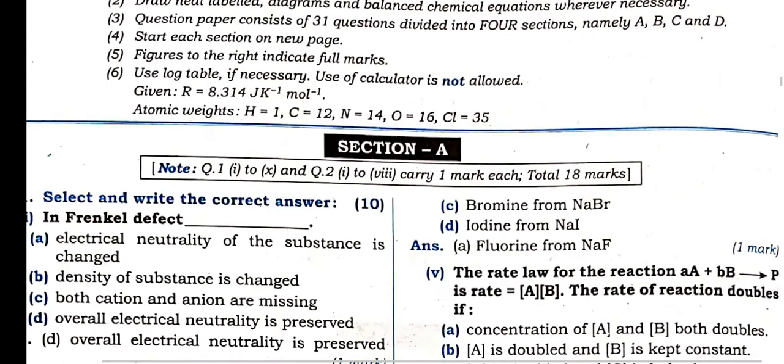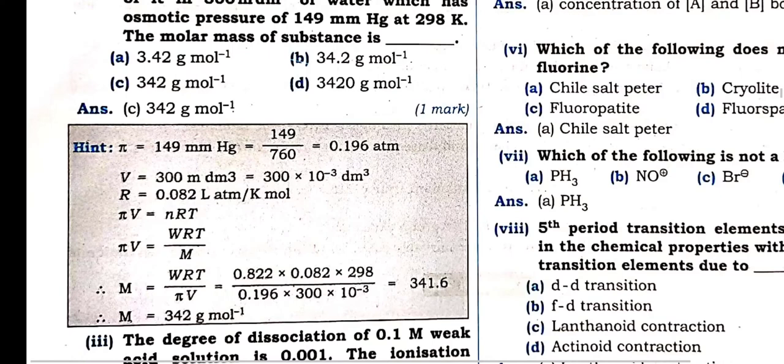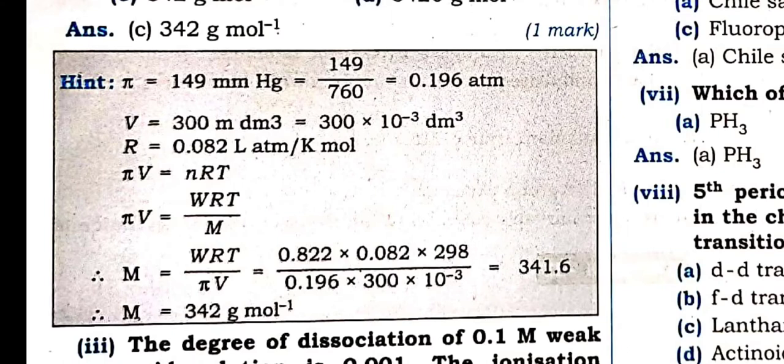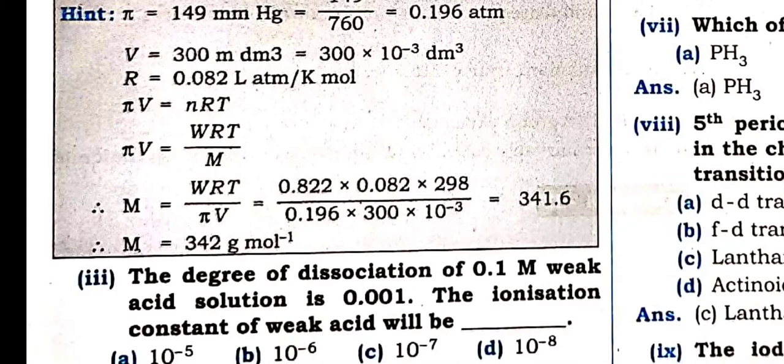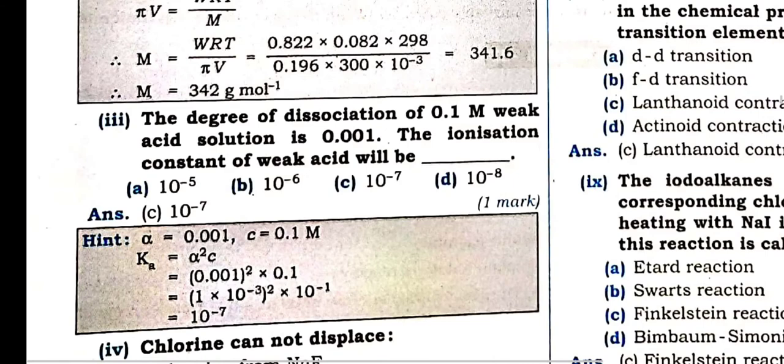Moving ahead with the solution part. Here first the numerical — you can see the formula that I said: pi·V = nRT. In place of n, weight upon molecular mass. Number of moles = W/M. Hence the value we can substitute and you can solve. Answer: 342 grams per mole.